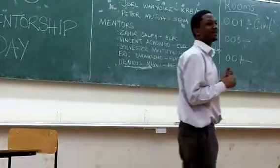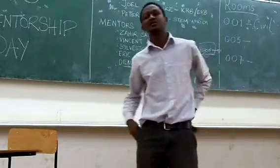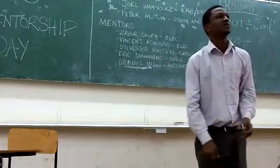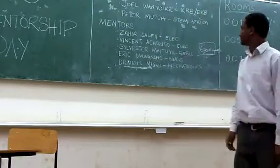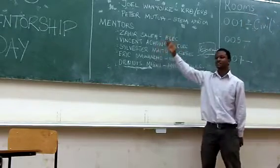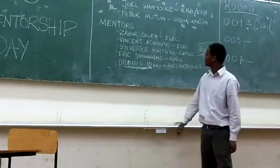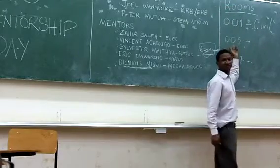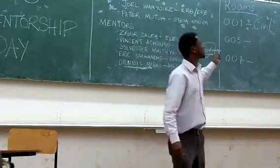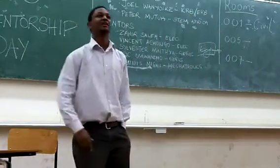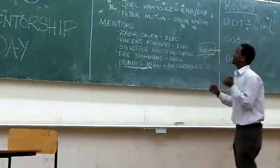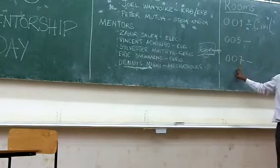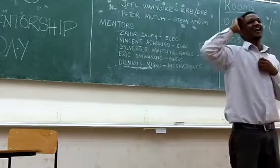What we're going to do now is split into our various disciplines and have an interactive session. We have three classes: TIE, electrical, and ECE are going to be here with Zaheel and Vincent. Judges will go with Eric to 005. Civil engineering moves to 001 with Engineer Anyake. Mechanical and mechatronics are going to 007 with Peter and Dennis.